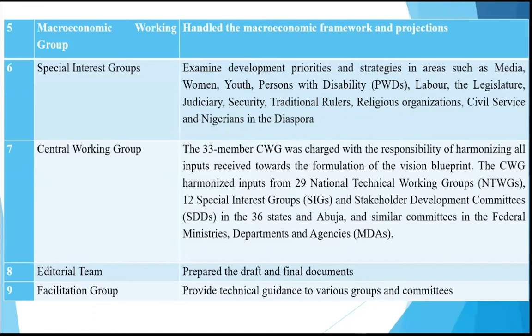Additional thematic groups covered science, technology and innovation, regional development, media and communications, culture, tourism, national orientation, water and sanitation, health, education, and corporate governance and social responsibility. All these groups outlined their own objectives and priorities, feeding inputs to the central working committee for incorporation into the plan document. There was also a macroeconomic working group to look at projections and provide policy guidance for the various sectors to achieve their plans and targets.